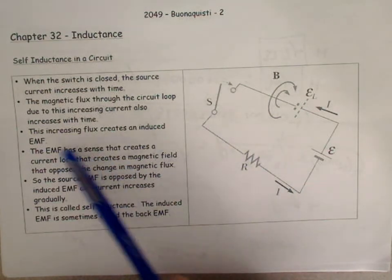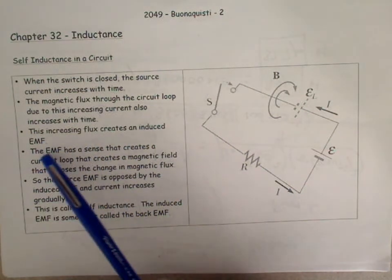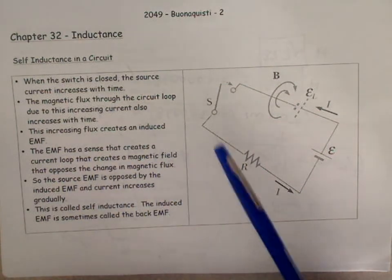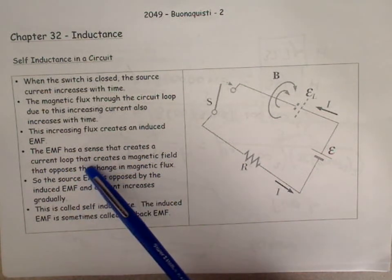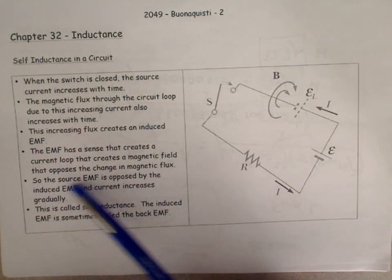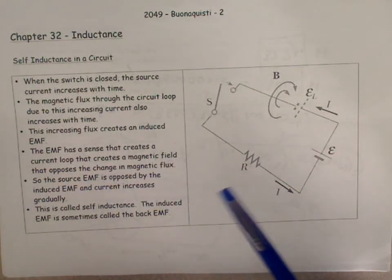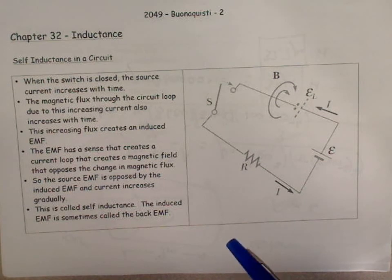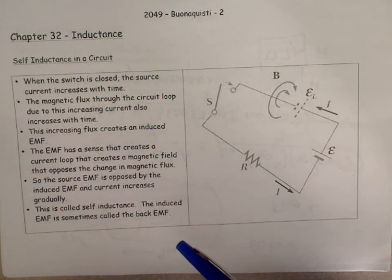This increasing flux creates an induced EMF. The EMF has a sense that creates a current loop that creates a magnetic field that opposes the change in magnetic flux. So the source EMF is opposed by the induced EMF, and the current increases gradually. This is called self-inductance. The induced EMF is sometimes called a back EMF.